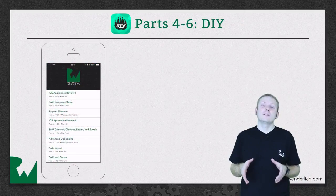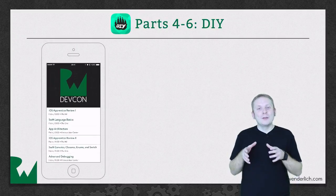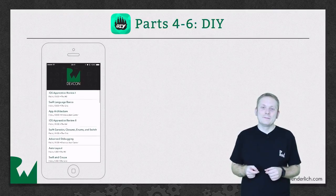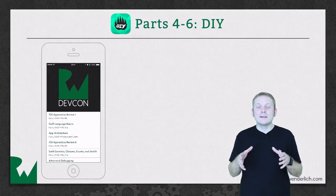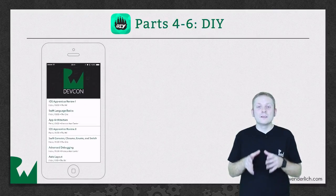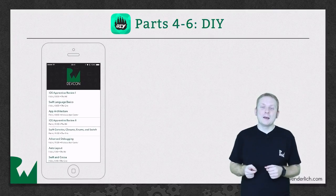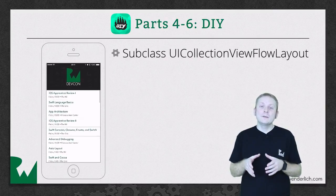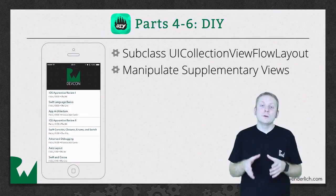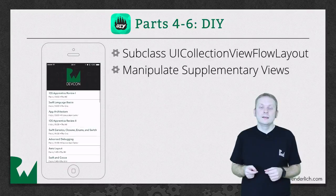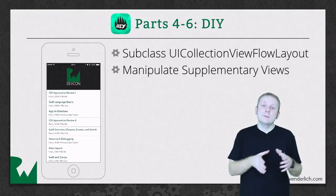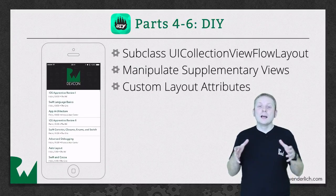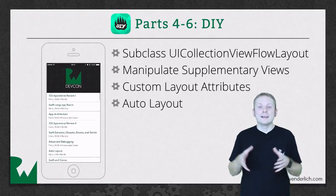In parts four through six, you'll build the ever popular stretchy header layout, inspired by the DIY Skills for Kids app. As the user scrolls, the header's background image scales down but its foreground image scales up, providing a fun sense of depth. This layout takes advantage of UICollectionViewFlowLayout and demonstrates how you can manipulate a collection view's supplementary views. You'll also leverage auto layout in this context to manage the image scaling, using custom layout attributes.